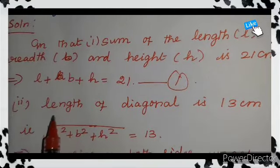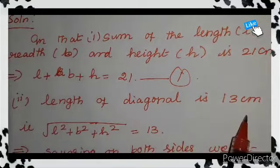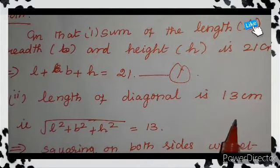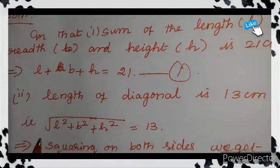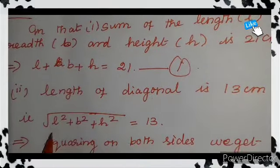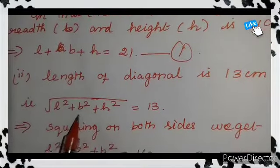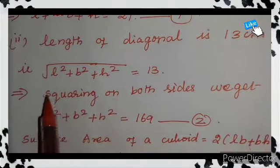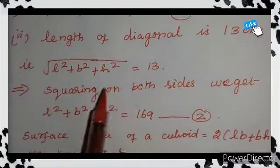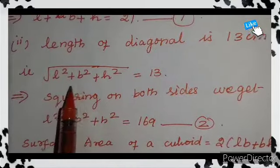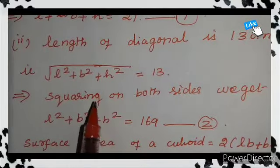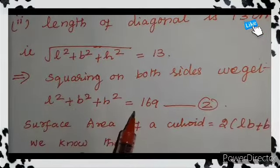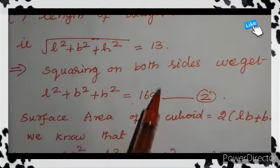The second condition is the length of the diagonal is 13 cm. The length of the diagonal of a cuboid is the square root of L squared plus B squared plus H squared, equal to 13. Squaring both sides to remove the square root, we get L squared plus B squared plus H squared equal to 169.